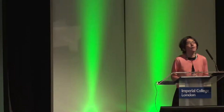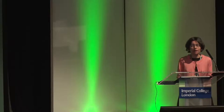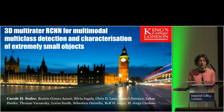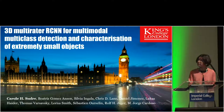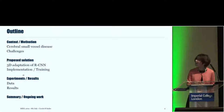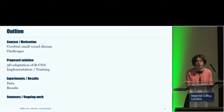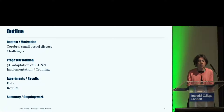Good afternoon, everyone. I'm Carole, and I'd like to talk about the work we have been doing on a 3D adaptation of region-based CNN for the detection and characterization of very small objects. Today, I'll first cover the context and motivation — cerebral small vessel disease and the challenges of detecting different lesion subtypes simultaneously — then walk through the solution, a pseudo-adaptation of RCNN, implementation, training, experiments, and ongoing work.